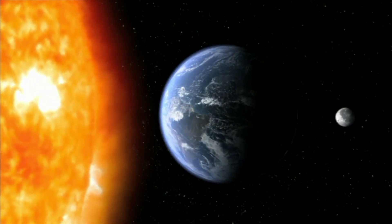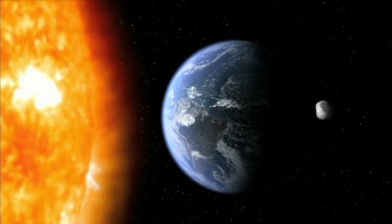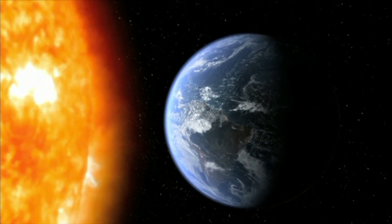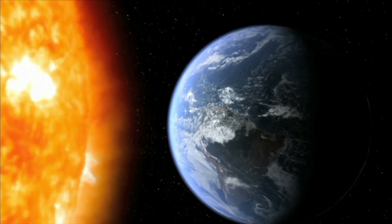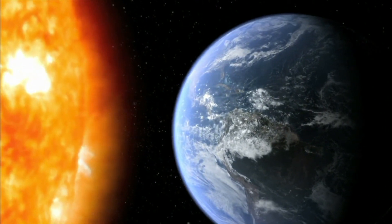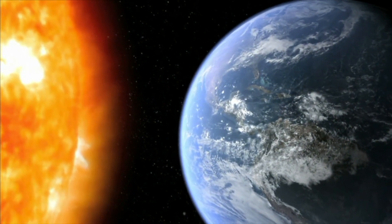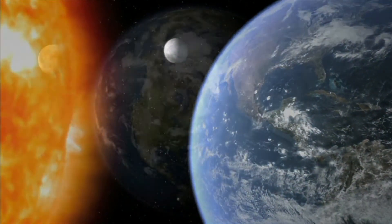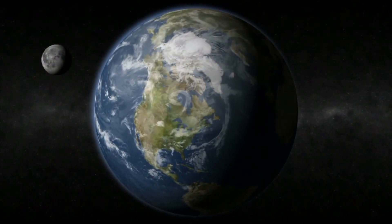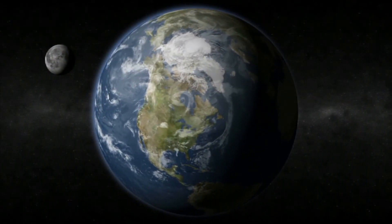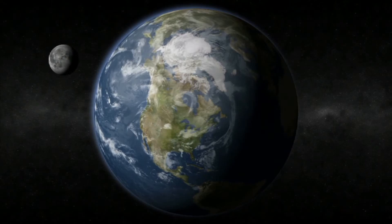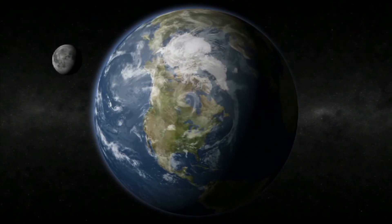While the Earth is orbiting the Sun, the Moon is orbiting the Earth. The Moon is orbiting at 2,288 miles per hour. It takes the Moon 28 days, or about one month, to make one revolution around the Earth.